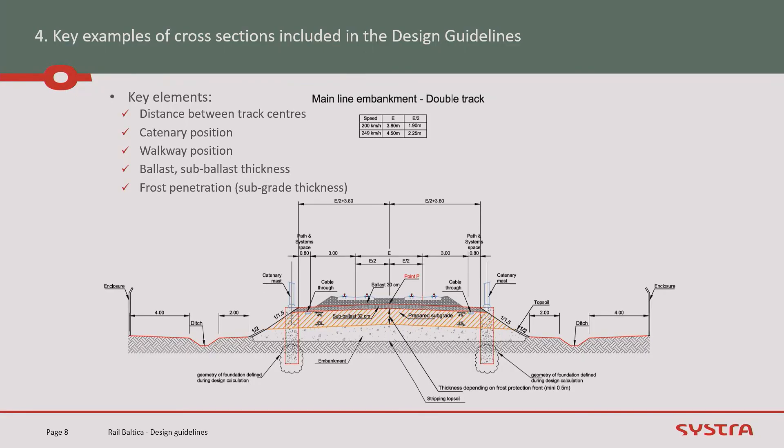Now I'm presenting some typical cross-sections included in the design guideline. In this most typical cross-section on embankment, you can see the distance between the track centers, the catenary position, walkway position, and the ballast and sub-ballast thickness. It is also defined in the design guideline as a frost penetration system, which has an impact on the subgrade thickness.